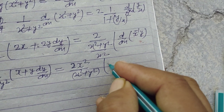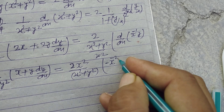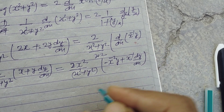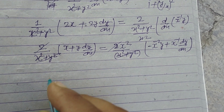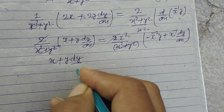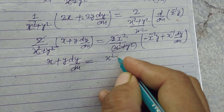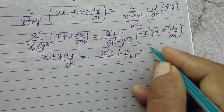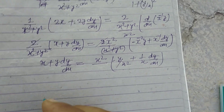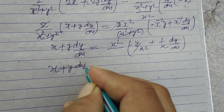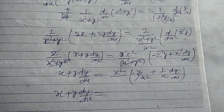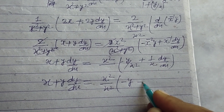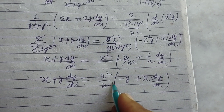So x + y·dy/dx equals x² on the right side, where we have differentiating y/x giving (−y/x²) + (1/x)·dy/dx. The x² + y² terms cancel out and the 2s are also removed.